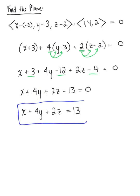That is our beautiful final answer. This is the equation of the plane passing through the ordered triplet (-3, 3, 2) and normal to the vector ⟨1, 4, 2⟩.